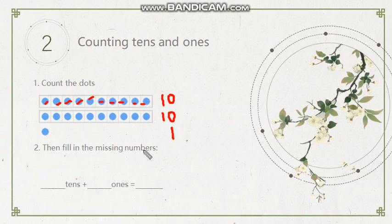So fill in the missing numbers again. How many tens? One, two. So we have two tens. And how many ones? Only one. So that gives you twenty-one.